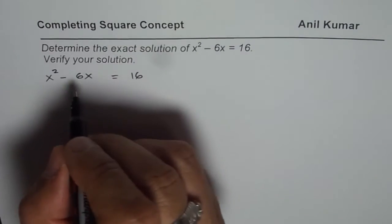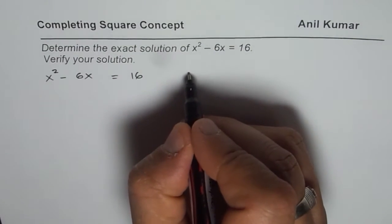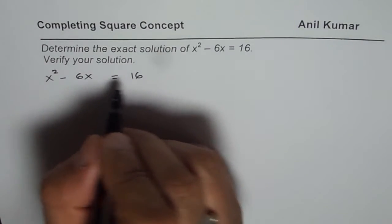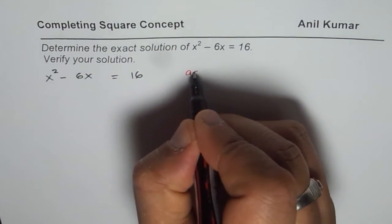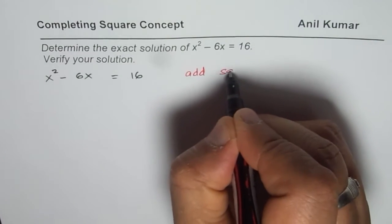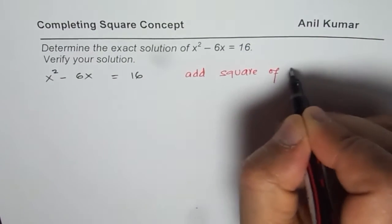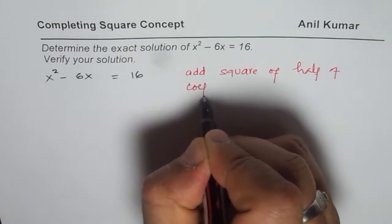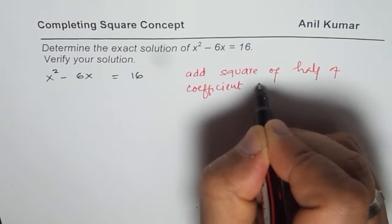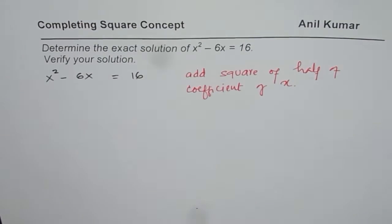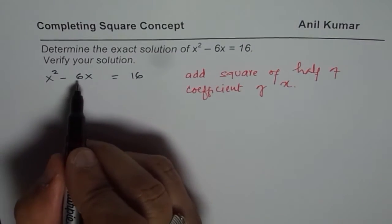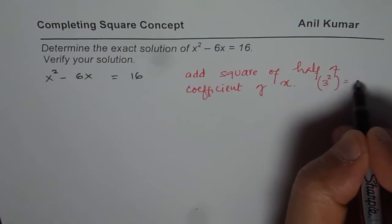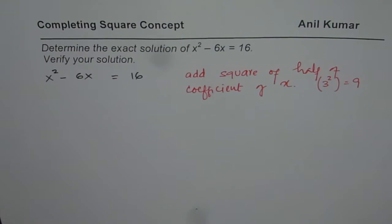So, how to complete? We will do half of 6 which is 3 and we square this number and add on both sides. So, we are going to add square of half of coefficient of x. That is what we are going to do. Now, half of 6 is 3. So, we will add and subtract 3 squared which is indeed 9. So, this is our first step.